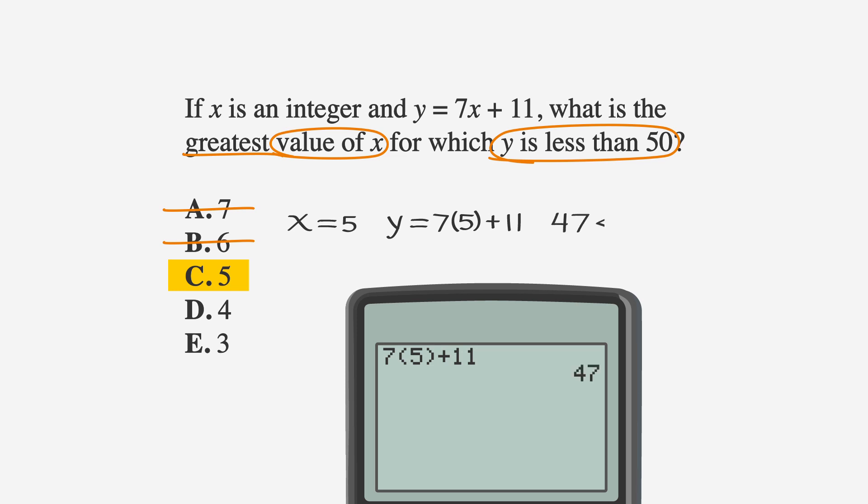Finally, 47 is indeed smaller than 50. We can cross out d and e because we're looking for the greatest value for x. And they're both smaller than 5. Let's circle our big winner, which is answer choice C.